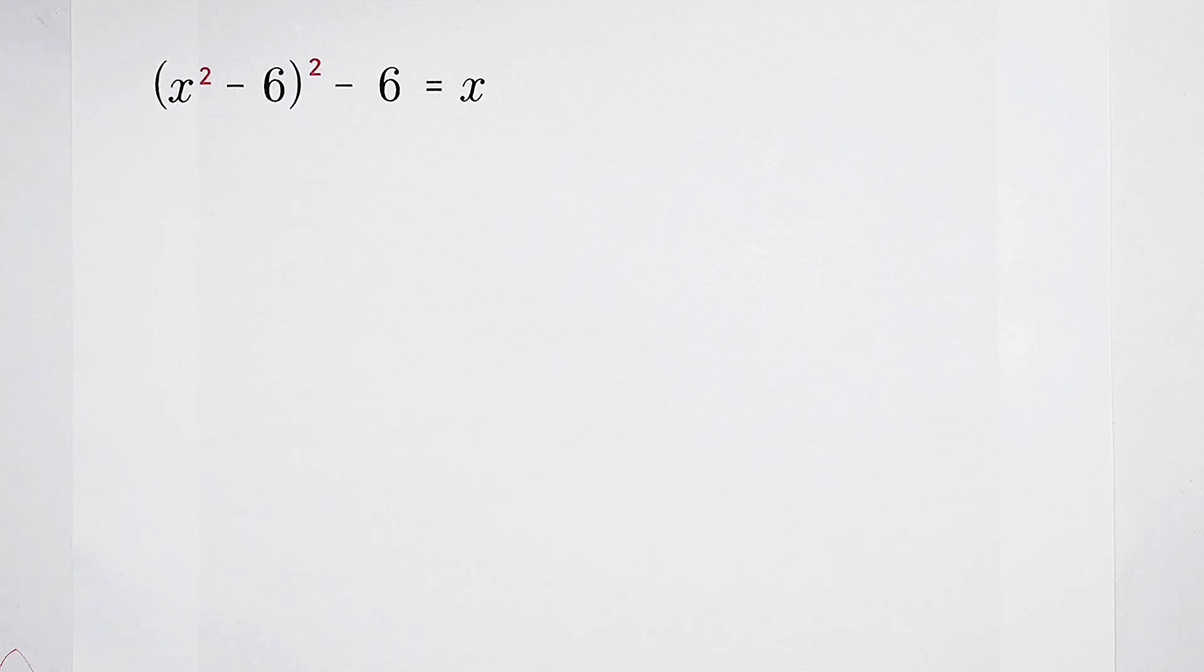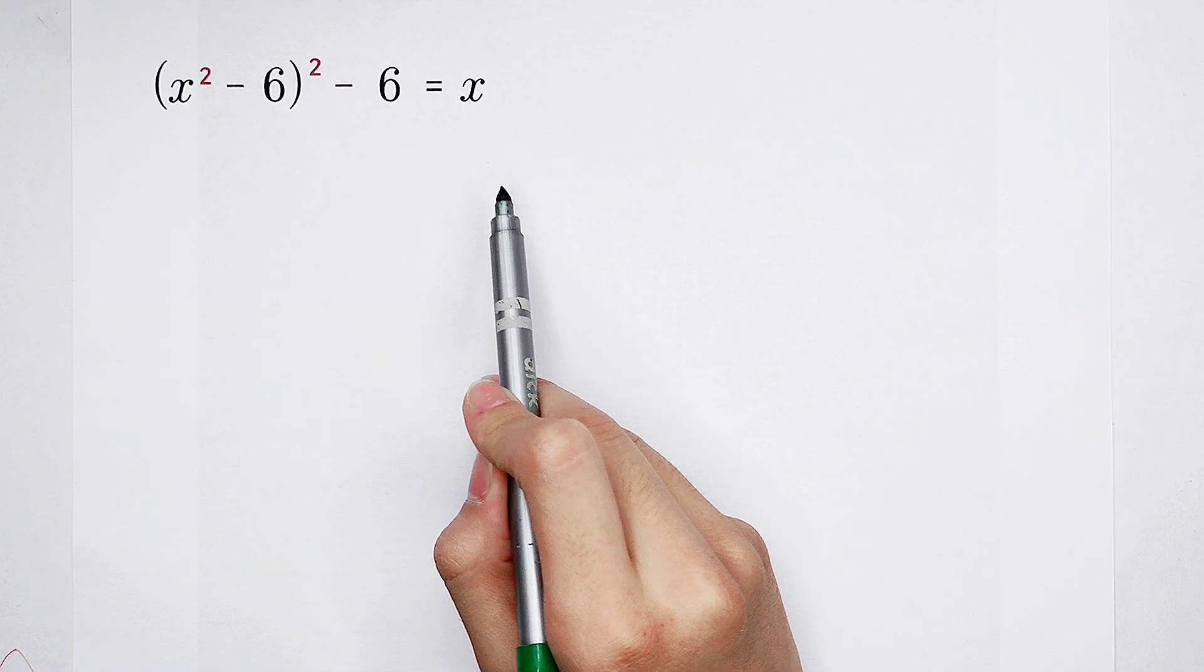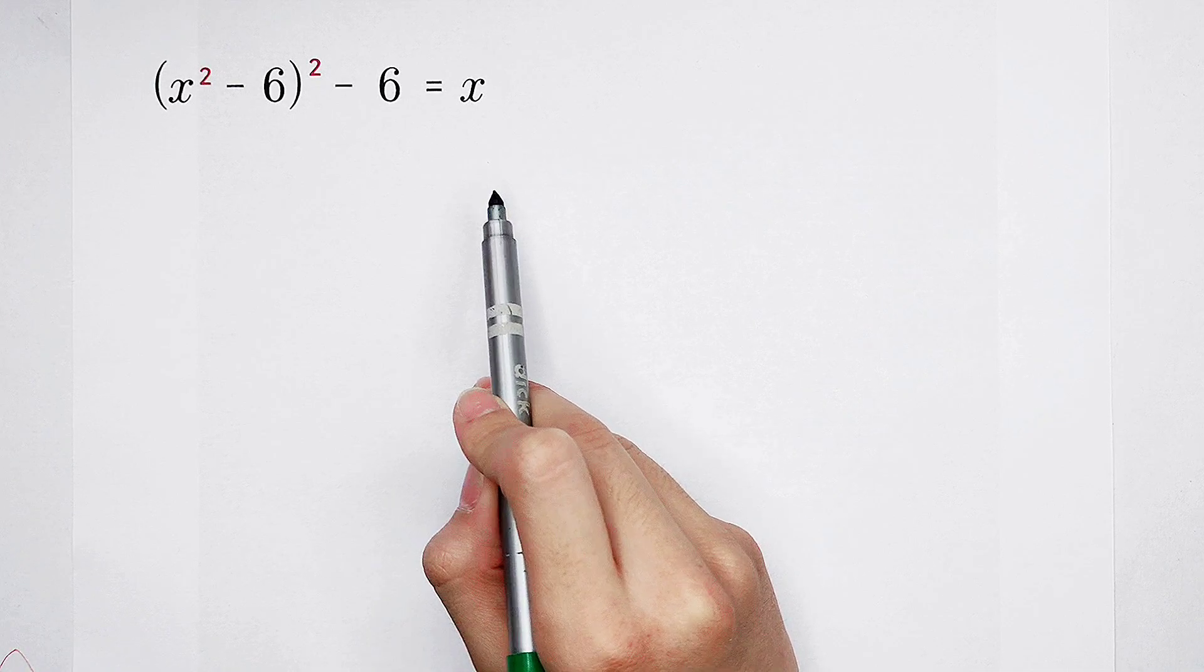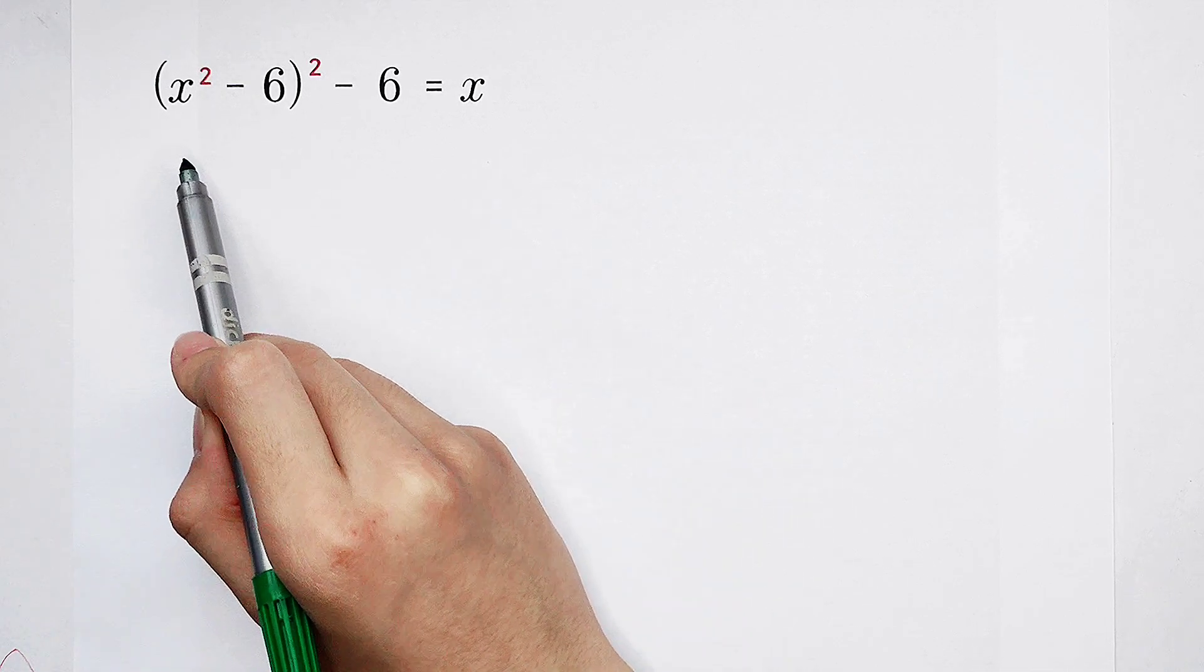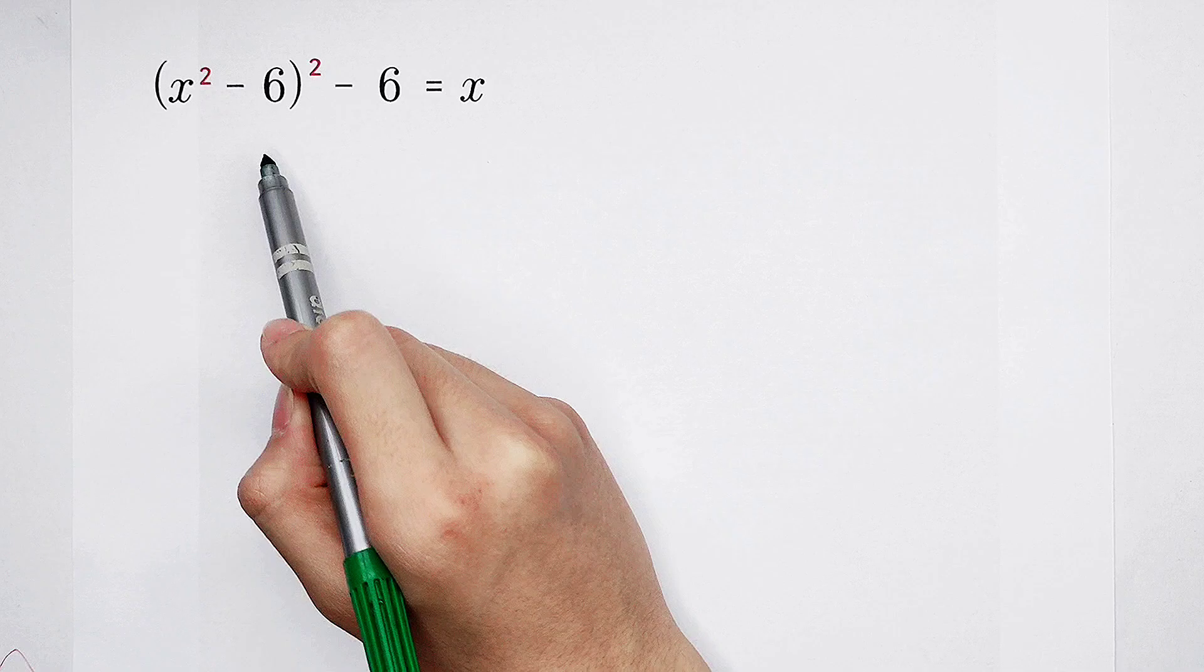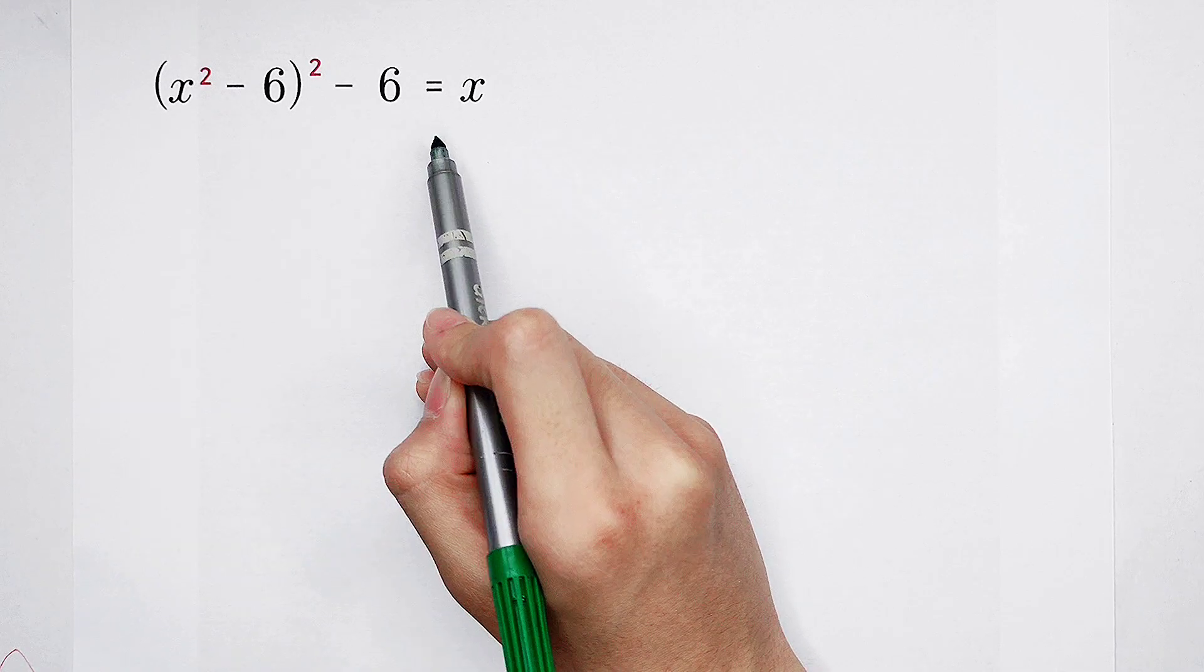Welcome to Mathwino. Are you able to solve this equation? Let's have a look at it. x squared minus 6, all squared, then minus 6, is equal to x.